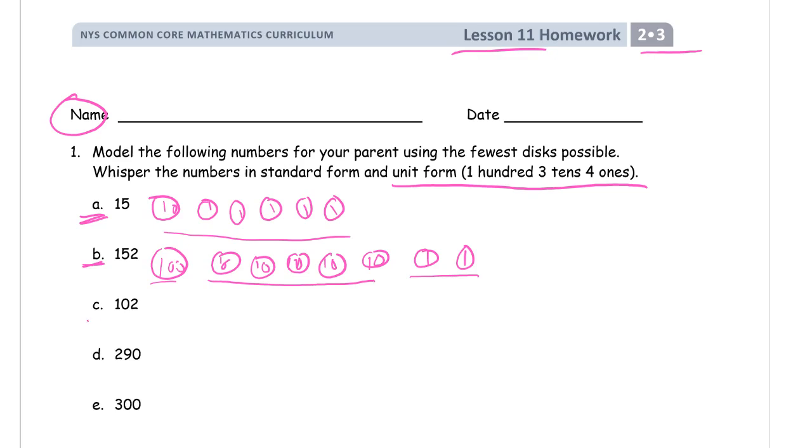The fewest disks for this number here, you need 1 hundred and you need 2 ones. Standard form for this number, say it out loud, is 102. And then unit form would be 1 hundred, 2 ones.